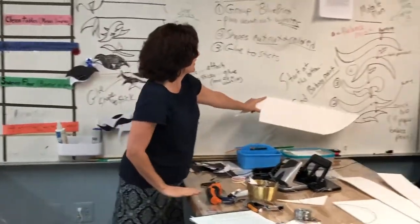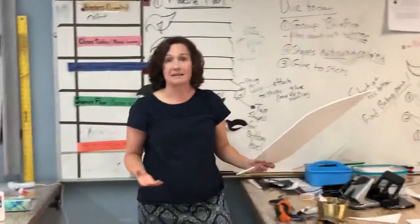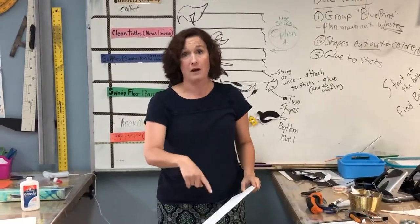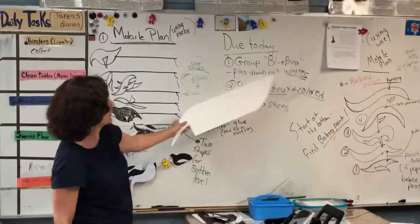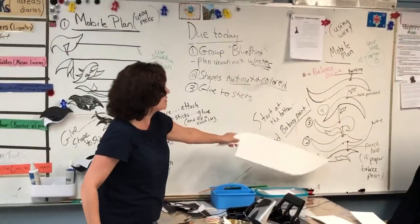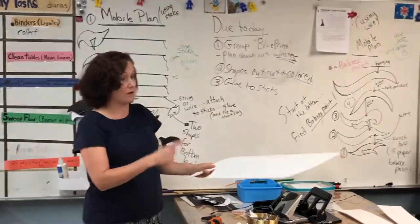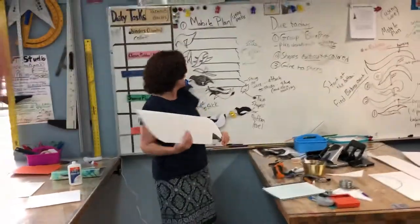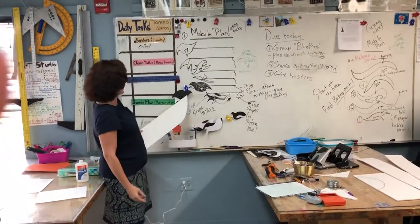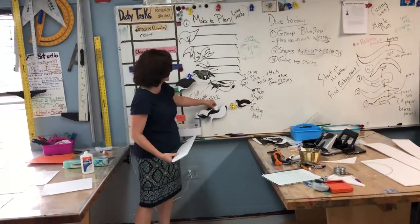So, I'm going to work on this, and then you guys will see me in class progress with this one. But the main goal today, again, is to get your plan drawn out. Then you know what you're doing. Then you start drawing your shapes onto the foam core and or mat board. And cut them out and attach them to the sticks.